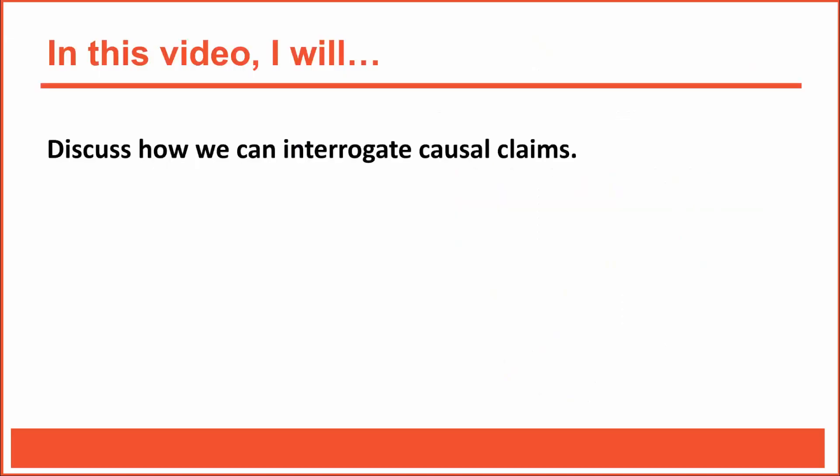So far, we've learned how to assess or interrogate the validity of frequency claims and association claims. Now that we know quite a bit about the four key validities and the three criteria for causation, we're ready to begin assessing or interrogating causal claims. So in this video, that's exactly what we'll do.